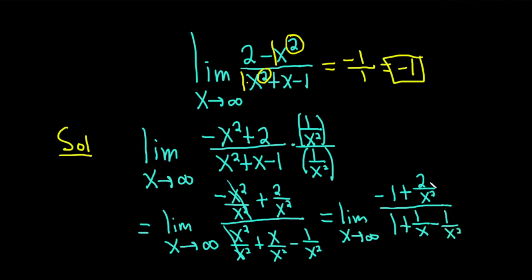Then as x gets really big, 2 over x squared approaches 0. So this is negative 1 plus 0. And then on the bottom, we just get 1. And these other two terms also approach 0, so plus 0 minus 0. So you just get negative 1 over 1, which is negative 1. Which is the answer we got at the beginning by simply looking at the ratio of the leading coefficients.